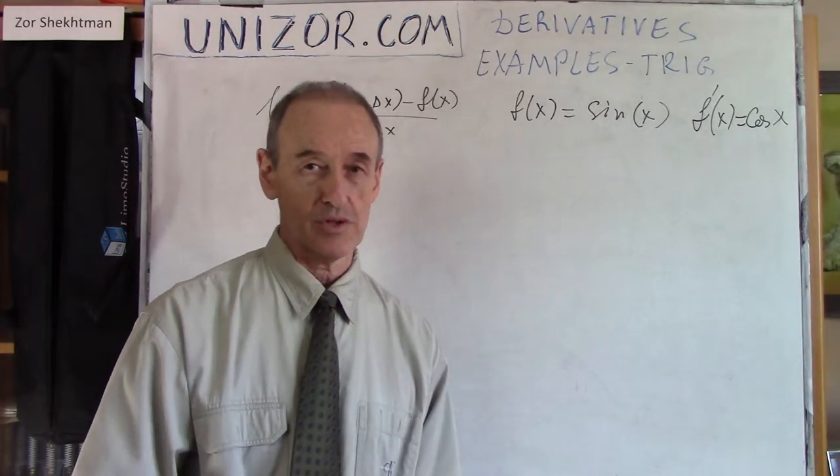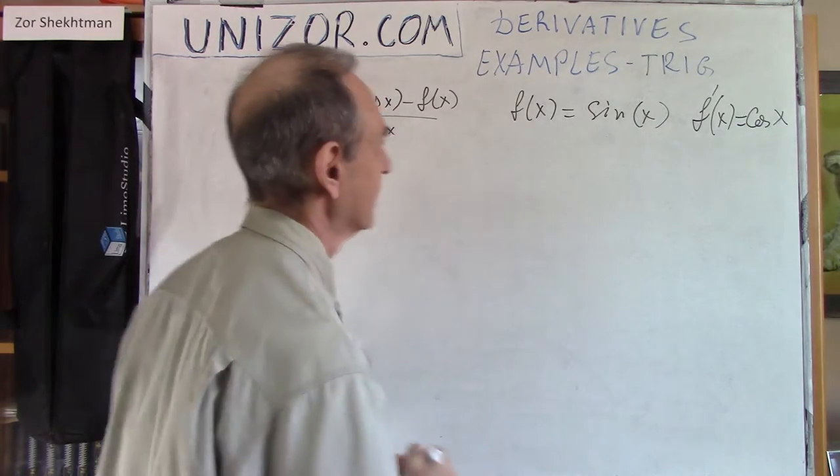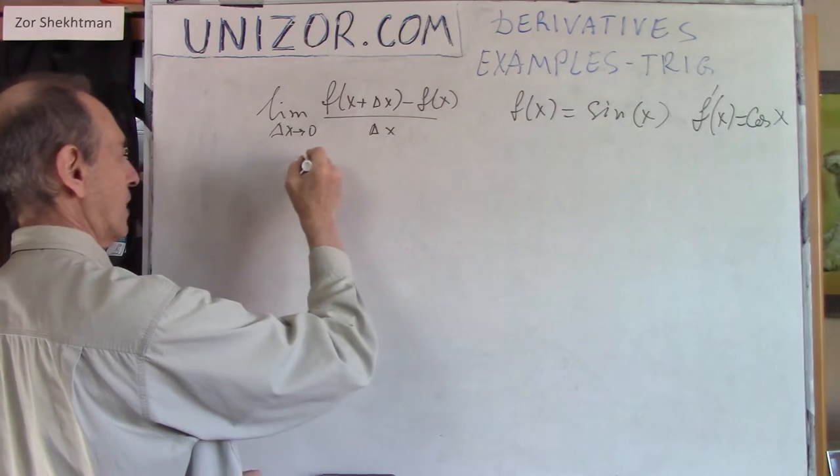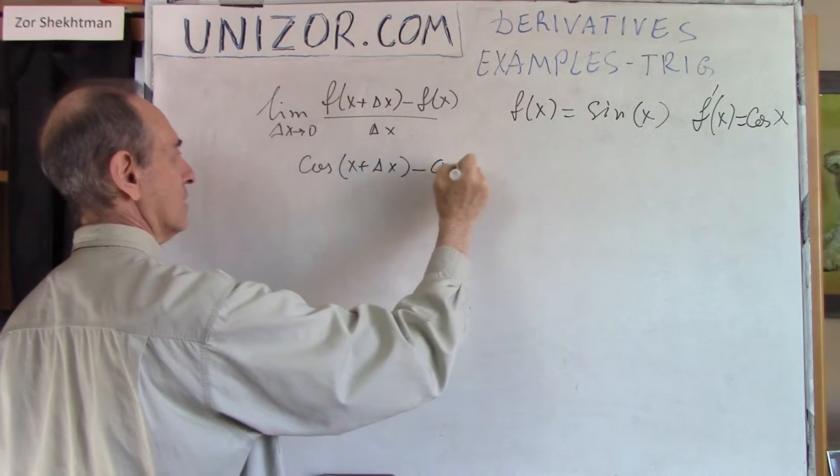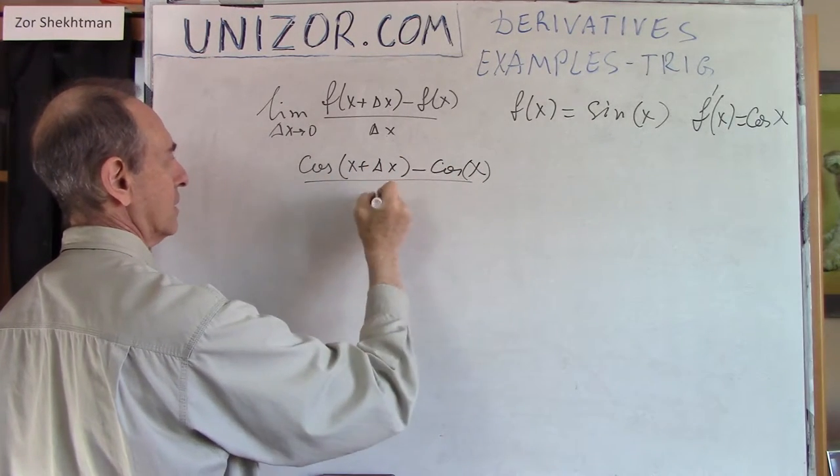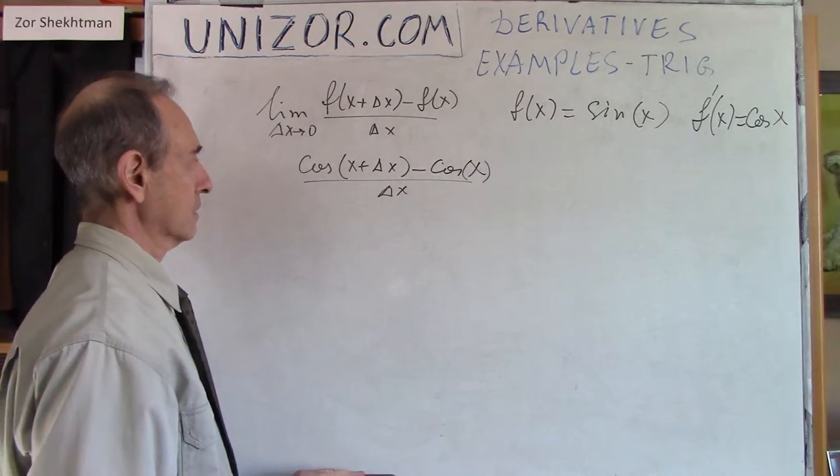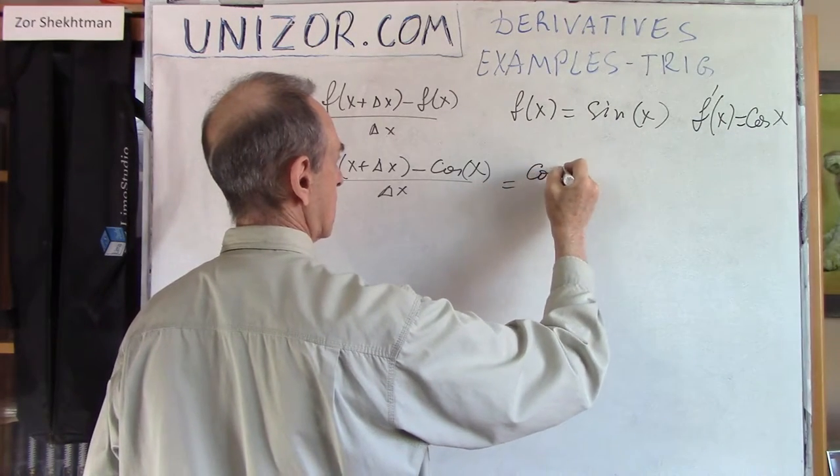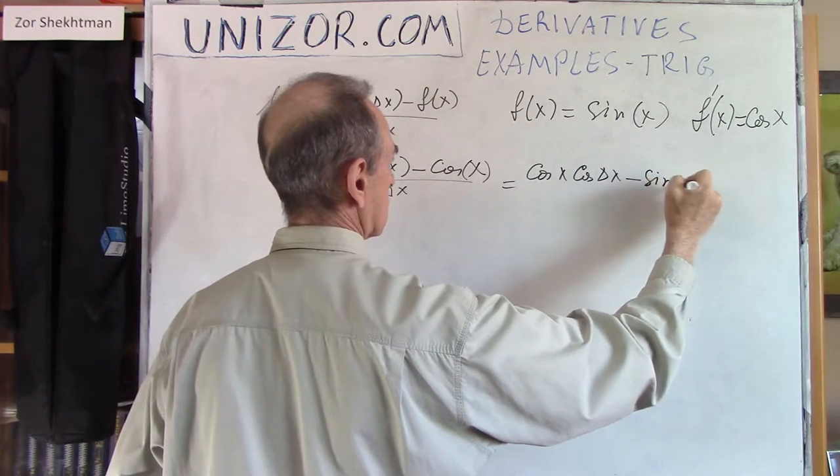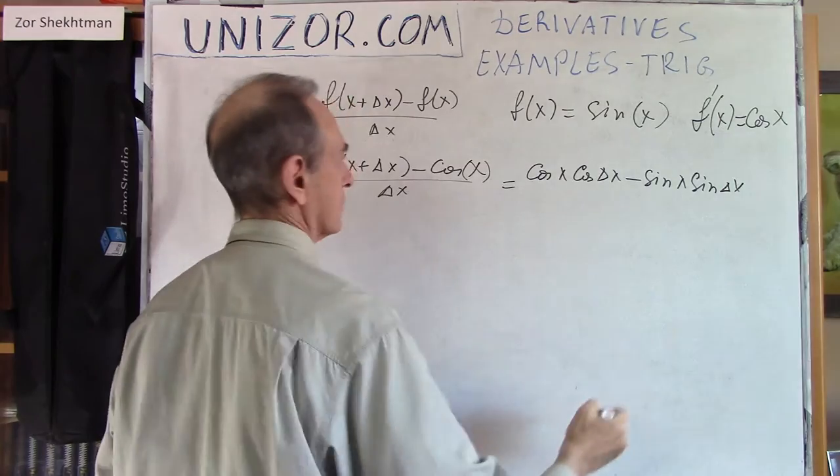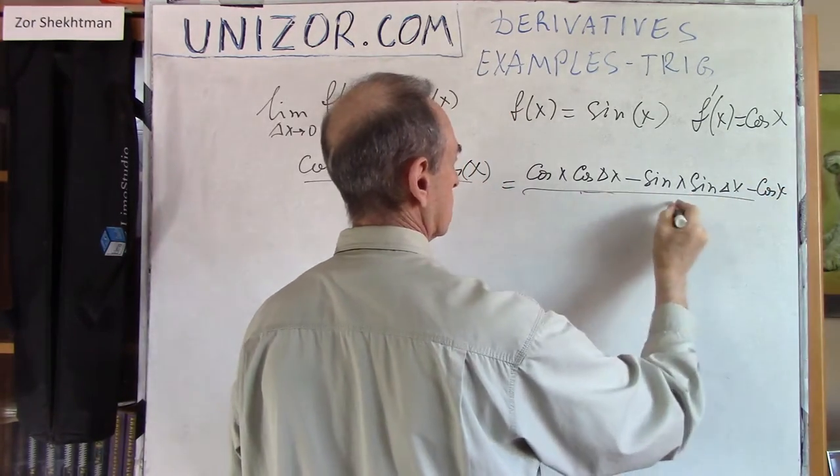And what is the derivative of cosine? Well, if you are guessing it's sine, it's almost correct. But let's check it out. We have cosine of x plus delta x minus cosine of x divided by delta x. We will use the formula for the sum of two angles. So that's cosine x cosine delta x minus sine x sine delta x, minus cosine x divided by delta x.